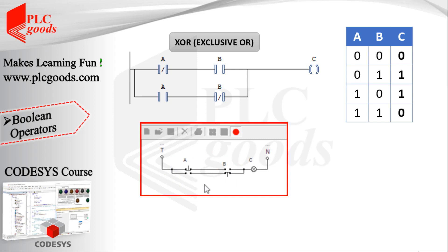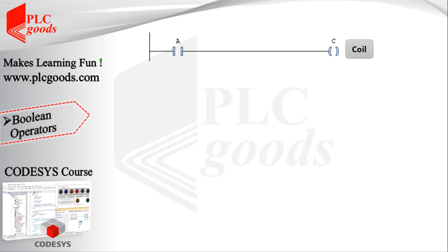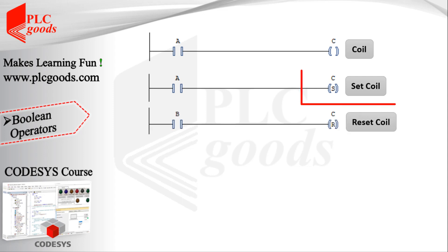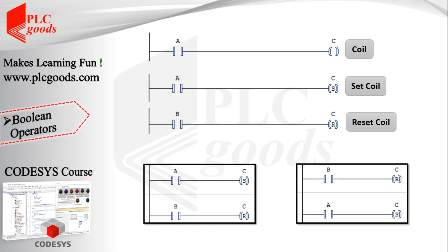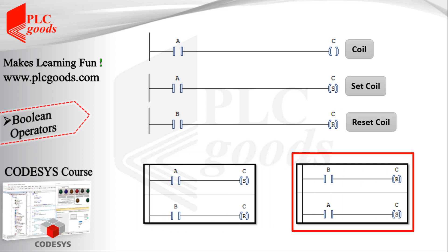Another important advantage of using PLCs is that they support a variety of instructions. For example, in addition to simple coils, set and reset coils can be used to turn on and off an output. The set coil is only used to set the state of a specified output to one, for example to turn on the C output. The reset coil is only used to reset a specified address to zero. Note that PLCs update all outputs at the end of each program execution, so if both instructions are activated for the same output, the last one wins. In the next videos, other instructions such as timers and counters will be explained.